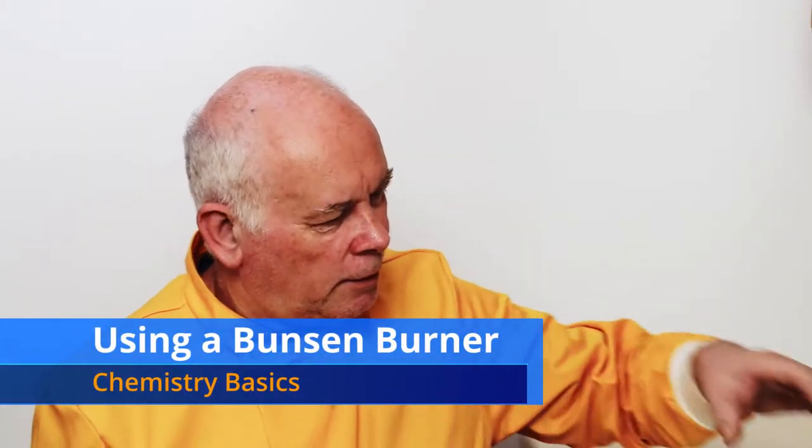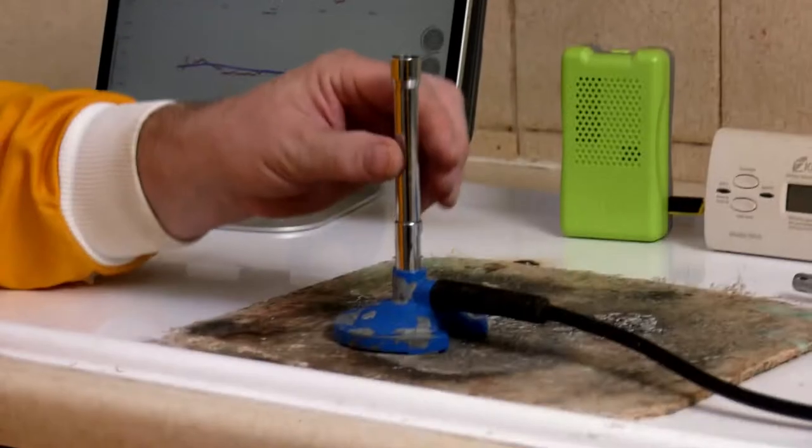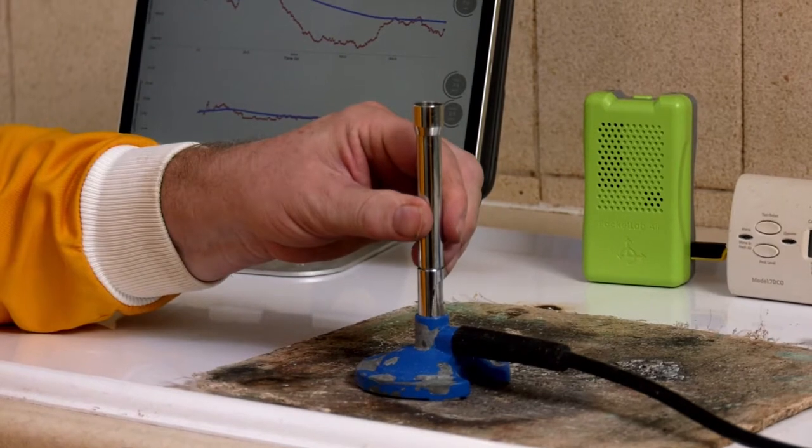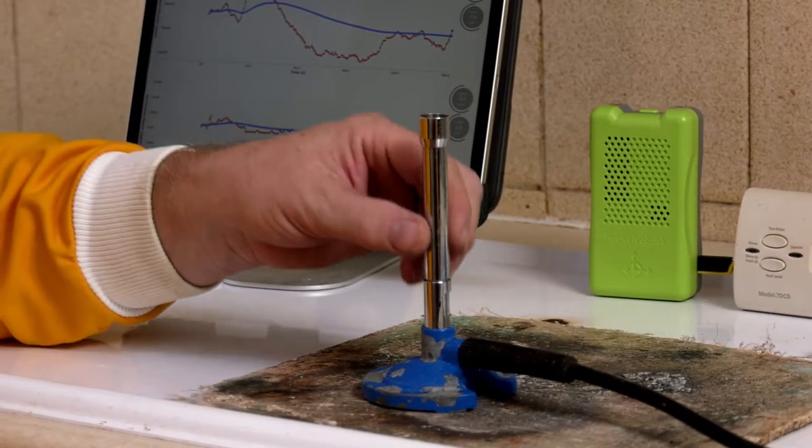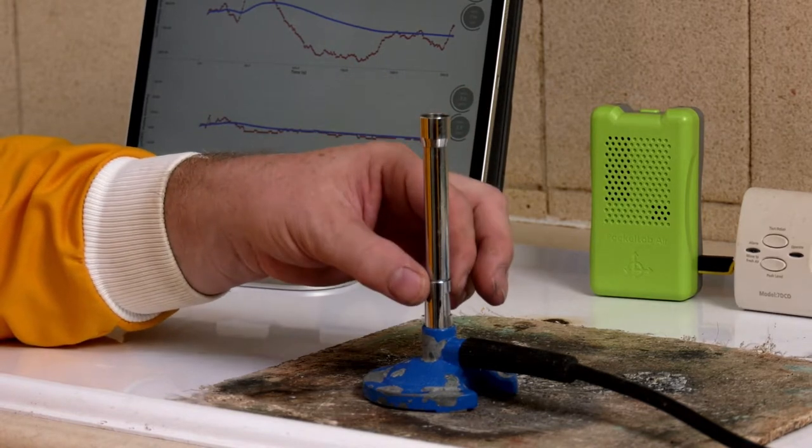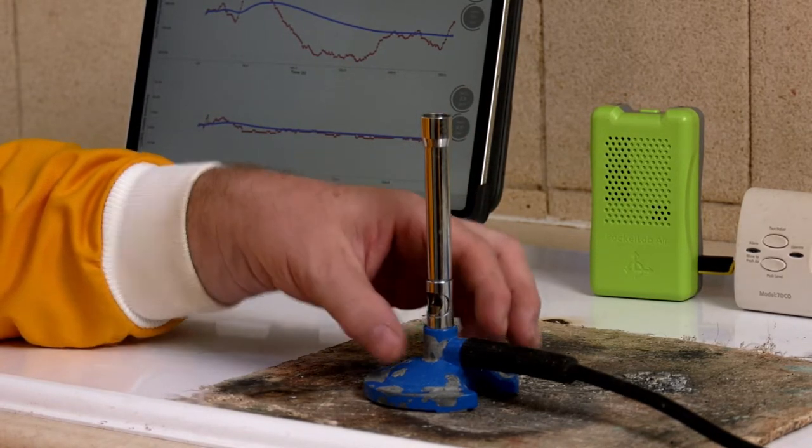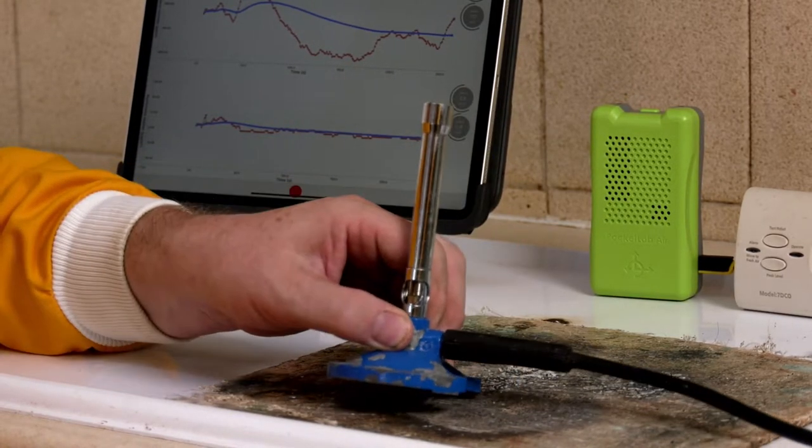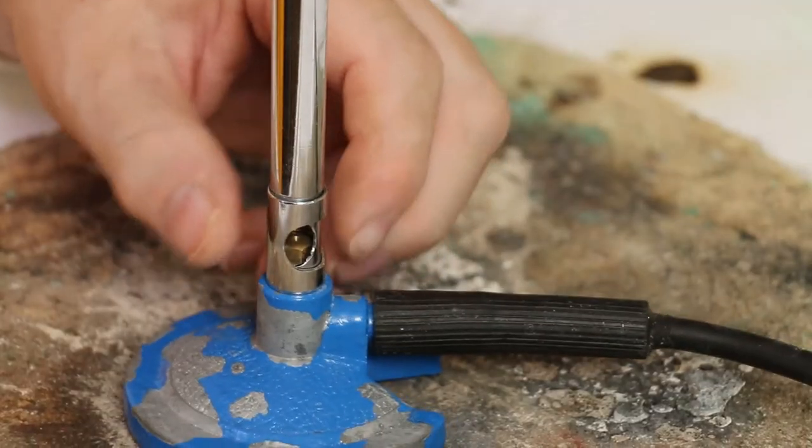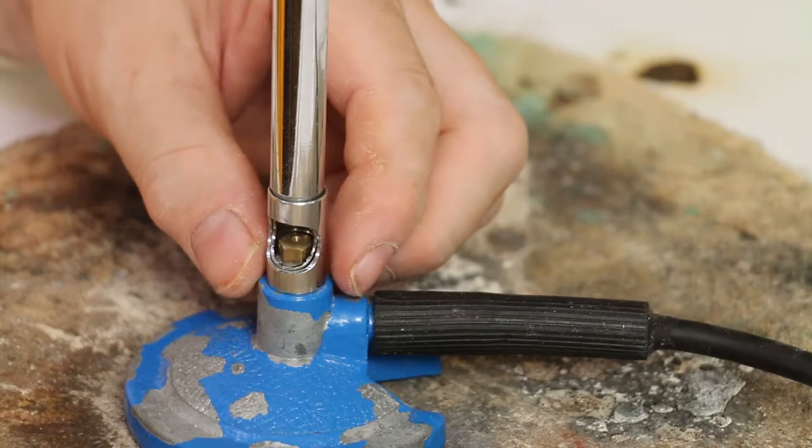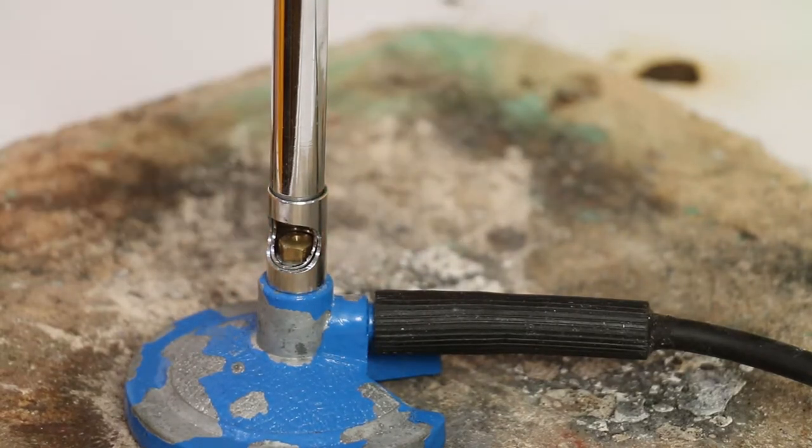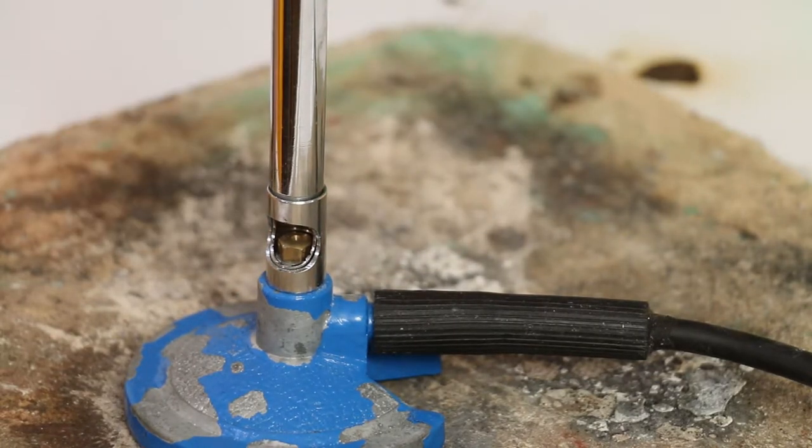This is all about Bunsen burner. This is a Bunsen burner many years old, developed by a guy called Bunsen surprisingly, and simply a gas supply going into a tube with a collar. Now at the bottom we can see there is a very small hole and the gas goes through this small hole.